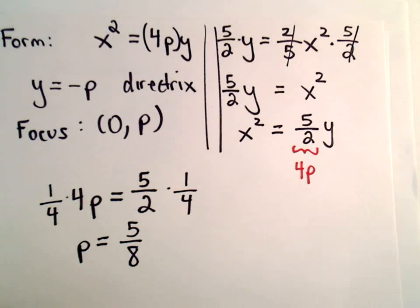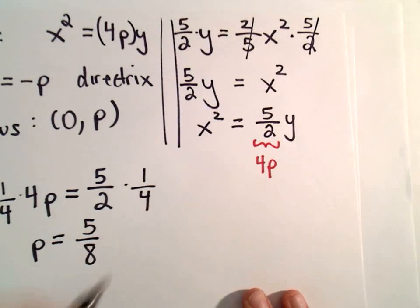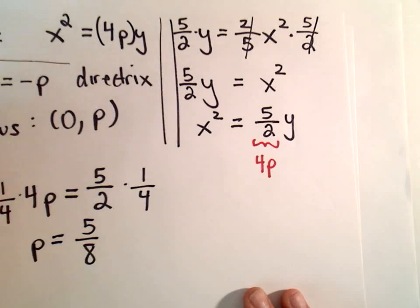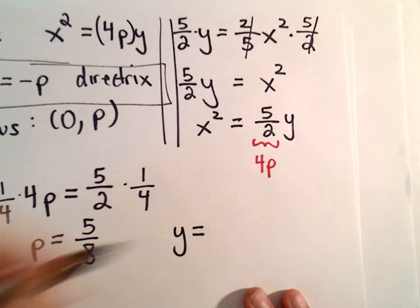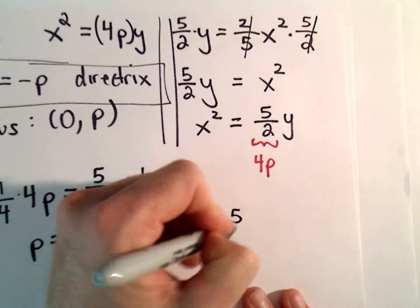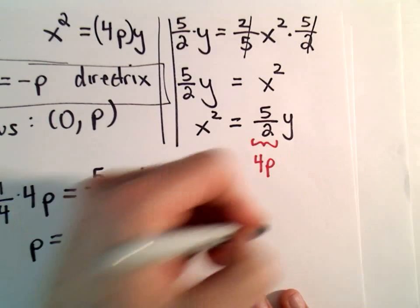Hey, we've got our p-value, and now we've done all the hard work. So it says the directrix for this parabola, it says our directrix will be y equals negative 5 eighths. So that's our directrix.